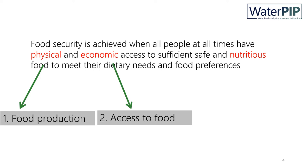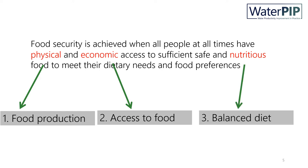A second element is economic access. This points to the fact that you need the economic means to access food — you need money to buy food, so you need an income to be able to access food. The third element, nutritious food, points to the need for a varied diet like vegetables, tubers, cereals, livestock products, and the like.